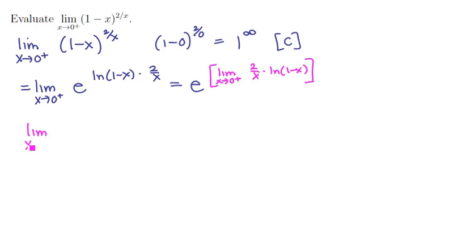We have the limit as x tends to 0 from the right of 2 over x times ln(1 minus x). We can actually rewrite this since it's already a fraction as 2 times ln(1 minus x) over x. And if you can write it as a fraction, it's not a bad idea because that means it's closer to being type A indeterminate and you can use L'Hopital's rule.